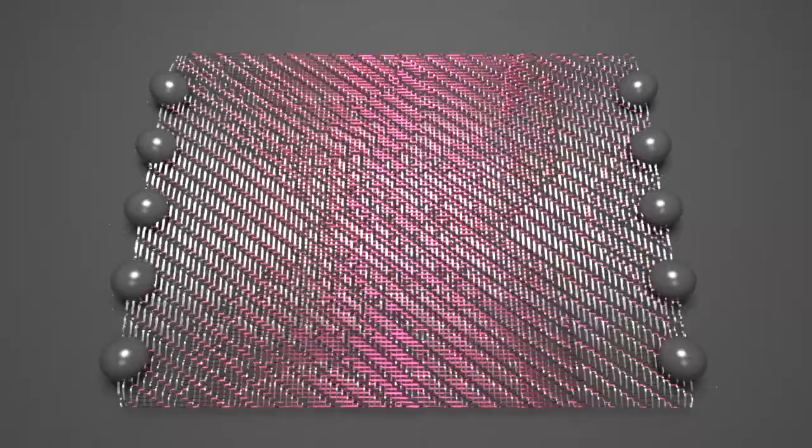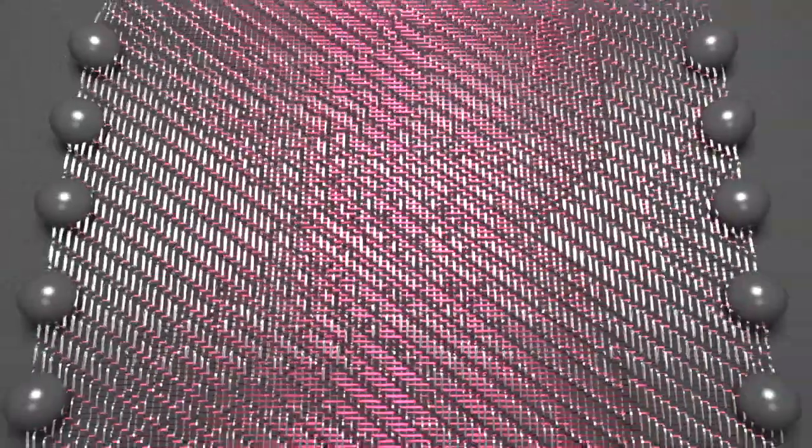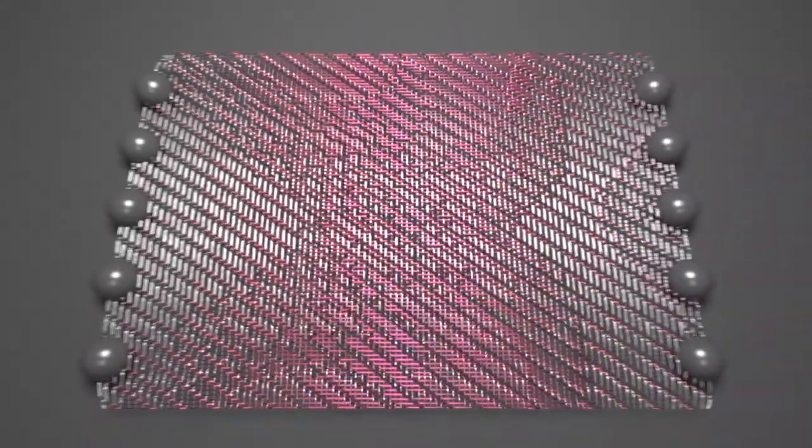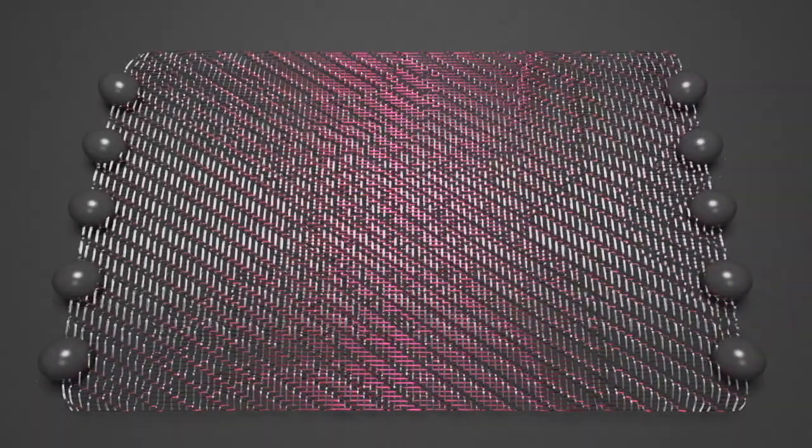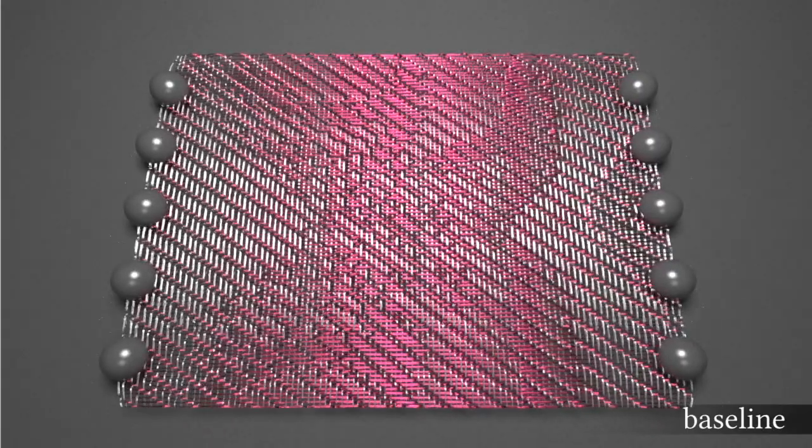Our technique can also model woven fabrics. In this example, a small piece of woven fabric with shiny yarns is stretched horizontally. Since this one-way stretching mainly affects the weft yarns that are in red, the entire model becomes less red due to the thinning of these yarns, which is successfully predicted by our technique.